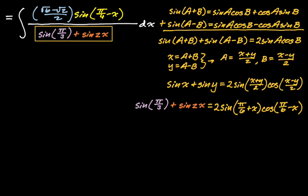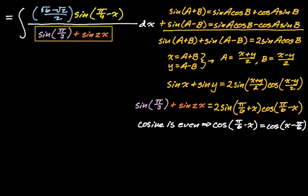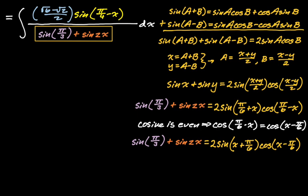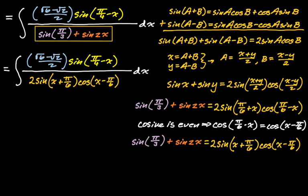At this point I kind of hate having minus x inside — in the numerator I have sine of pi over four minus x too. I'm going to use the fact that cosine is even to rewrite: cosine of pi over six minus x is the same as cosine of x minus pi over six. So the thing in the box is now two sine of x plus pi over six, times cosine of x minus pi over six. I'll replace it and then the two in the denominator can go up to the numerator.